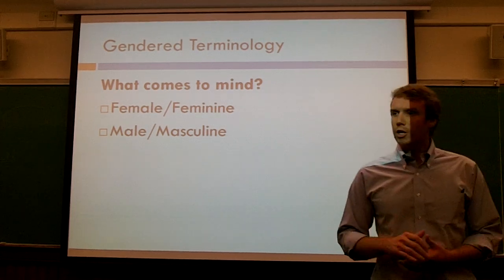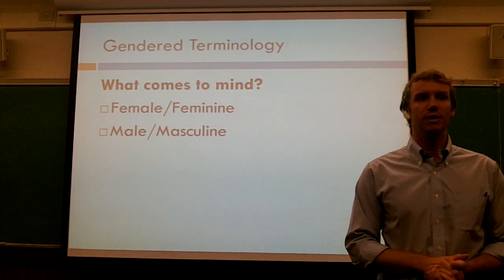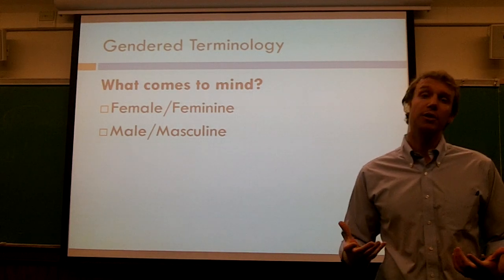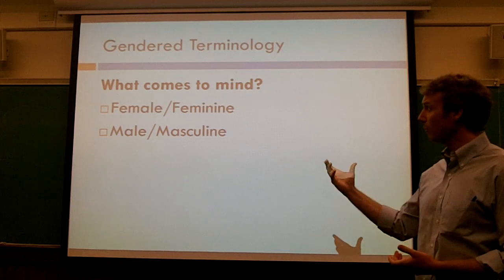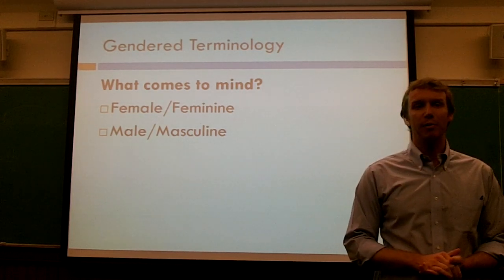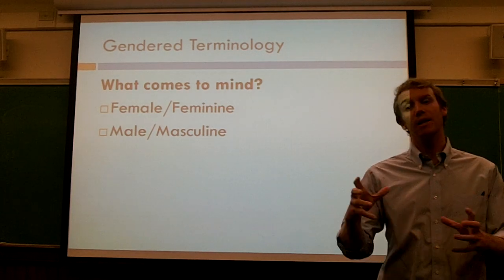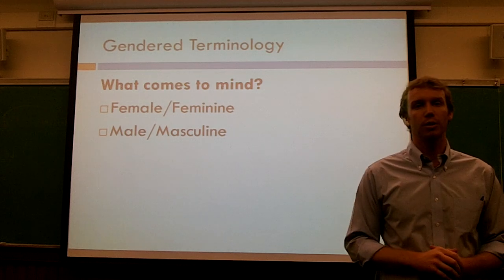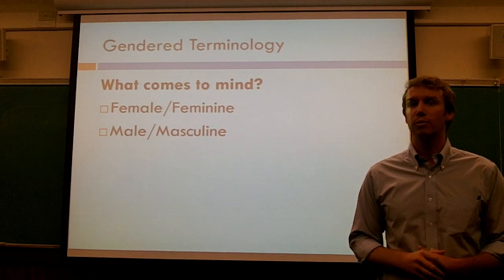We have some very specific terms that often get used when thinking about gender and gender behaviors in society. Probably the most common ones are female, feminine, and male, masculine. Female and male are the categories that we use, and feminine and masculine are the words we use to describe behaviors and practices for those genders.